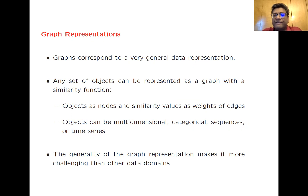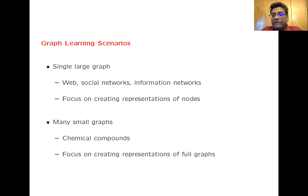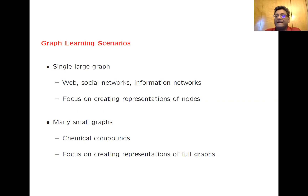This generality of the graph representation also makes it more challenging than other data domains as far as neural network processing is concerned. There are two main scenarios in graph learning. One scenario is that of a single large graph, encountered in cases such as the web, social networks, or information networks, where you have one very large graph and individual nodes corresponding to actors or objects. The focus in this type of learning is creating multidimensional representations of nodes using a neural network.